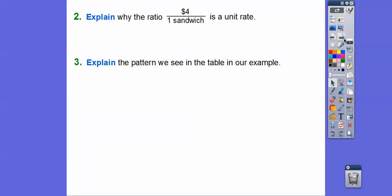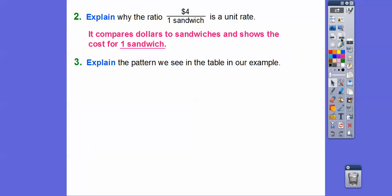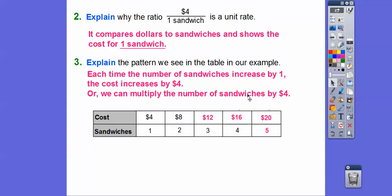Explain why the ratio $4 for one sandwich is called a unit rate. A unit rate is when we have it for one sandwich or for one of anything. It compares the dollars to sandwiches and shows the cost for one sandwich — unit means we want it in terms of one. The pattern in the table: each time the number of sandwiches increases by one, the cost increases by four. Or we can take the number of sandwiches and multiply it by four, and that gives us the cost for that number of sandwiches.